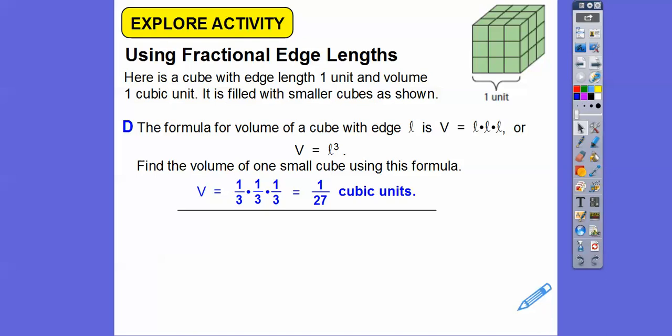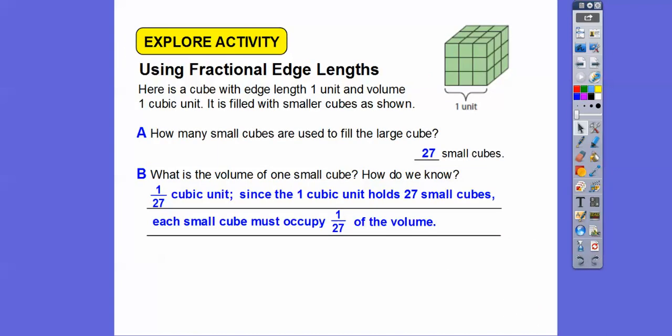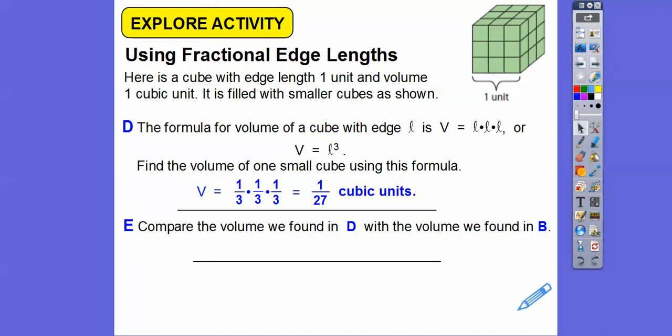And then it says here, compare the volume that we found right there in section D with the volume we found in section B. Well, let's go look at section B. Section B is right here, we got 1/27th. Well, that's the same thing that we got right here in section D. We got 1/27th right there. So the volumes are the same.